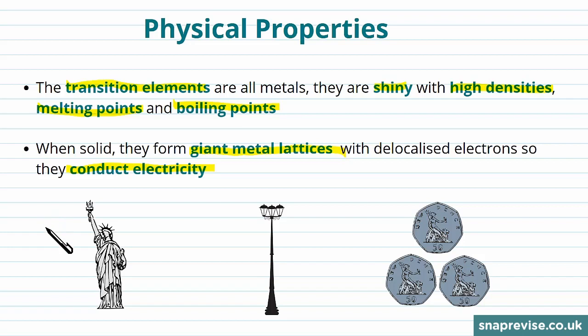For example, the Statue of Liberty contains lots of copper, lampposts tend to contain lots of iron, and 50 pence pieces contain nickel, all of which are transition elements, and all of which have the properties that make these items useful to us. You wouldn't want bendy 50 pence pieces, or a Statue of Liberty that's likely to melt on a hot day.